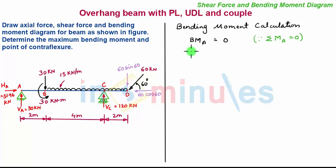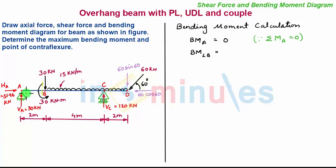Now we move to point B. At point B there is a couple acting, so we take a section towards the left of B and very near to it. Considering the left-hand side of the section, there is a clockwise moment caused by the vertical support reaction of 30 kN acting at a distance of 2 m. So we have 30 multiplied by 2, which gives 60 kNm.